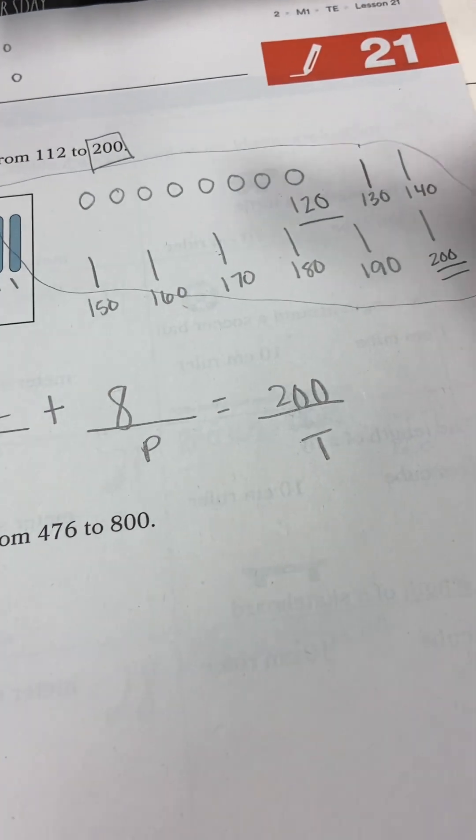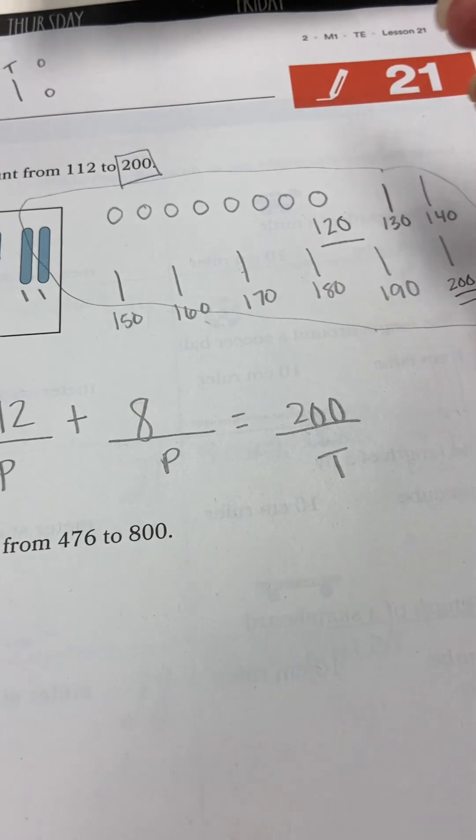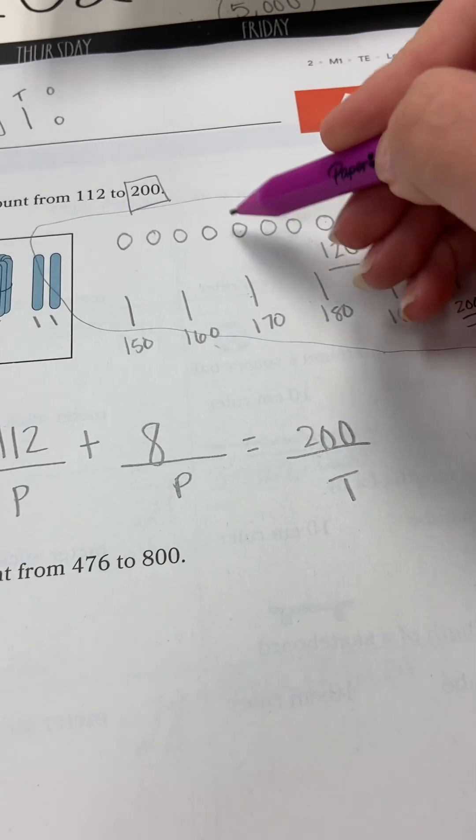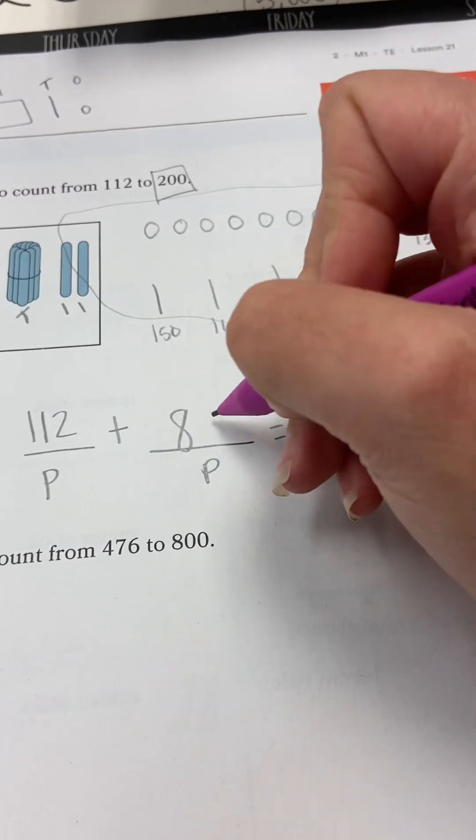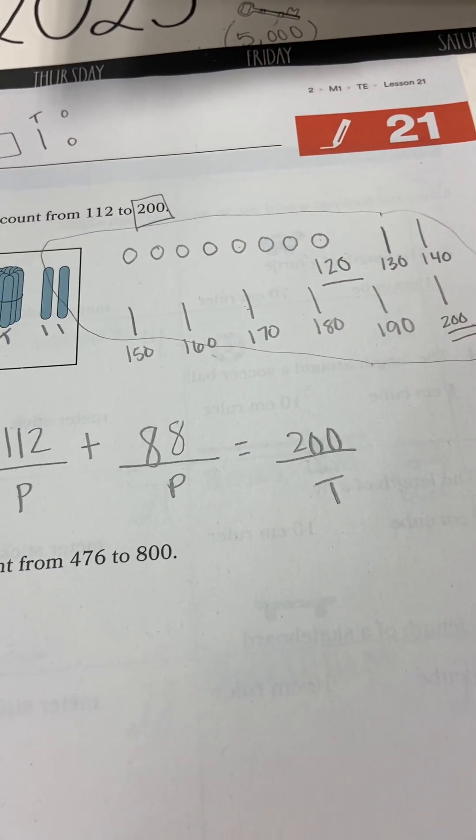And how many ones? Well, our ones are our circles. So we are going to count our circles. 1, 2, 3, 4, 5, 6, 7, and 8. And I always get them to recount it a few times just to make sure that they counted correctly.